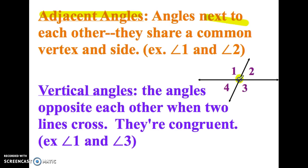So for example here, if I have angle one and angle two, they have the same vertex down here and they share this side. So they are adjacent, they're next to each other.